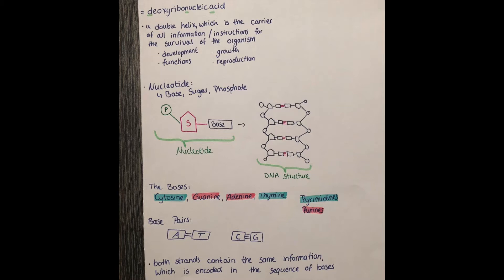The DNA is found in the cells as a double helix which is the carrier of all information and instructions for the survival of the organism. Included are information for the development, growth and reproduction of the organism, and also for many different functions. But before we come to the topic of how the information is encoded, we want to first talk about the structure.